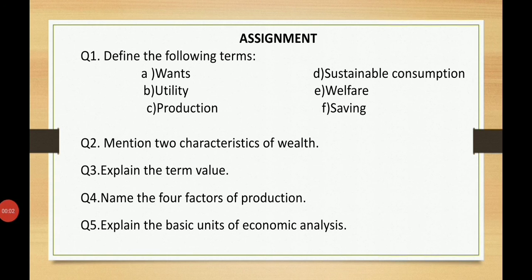Now I am giving you the assignment. Question one: define the following terms — wants, utility, production, consumption, welfare, saving. Question two: mention two characteristics of wealth. Explain the term value in use and value in exchange. Question four: name the four factors of production — land, labor, capital, entrepreneur. Question five: explain the basic units of economic analysis — household, firm, government, and foreign sector.